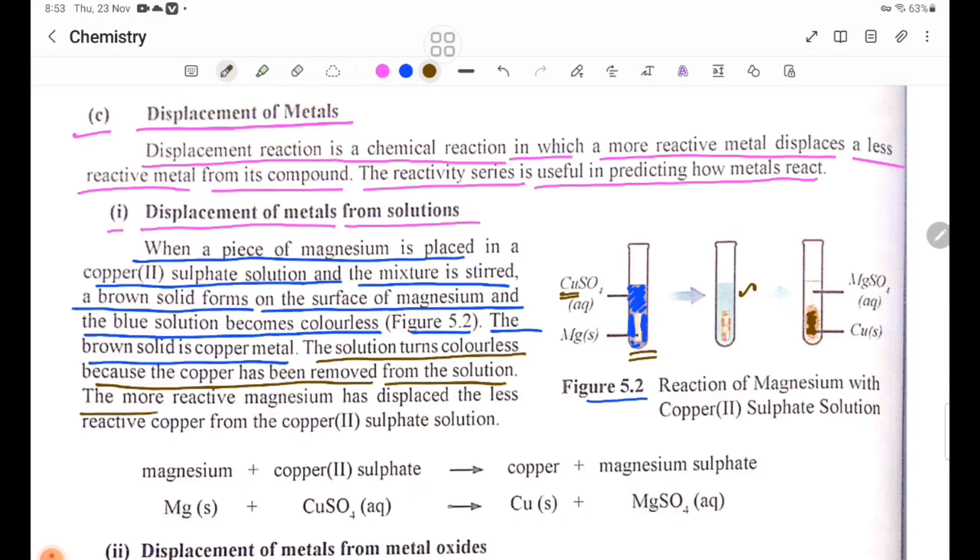The more reactive magnesium has displaced the less reactive copper from the copper-2-sulfate solution.